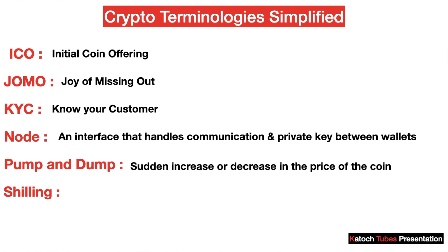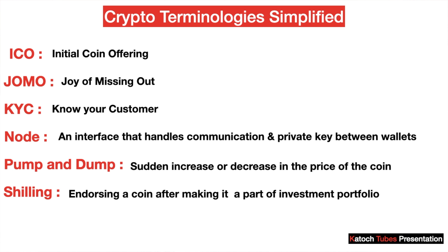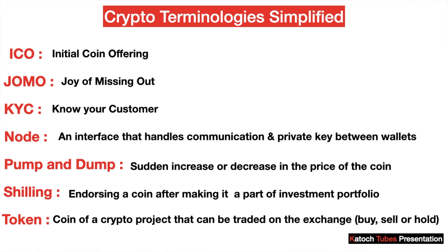Next is shilling. Whenever a buyer purchases coins and wants to promote them using mediums like social media, friends, or family members, it's called shilling — which is nothing but endorsing a coin. Token: a token is a coin of a crypto project which is bought, sold, or held. For example, in the case of Ethereum, ETH is the token; in the case of WazirX, you have the WRX token.